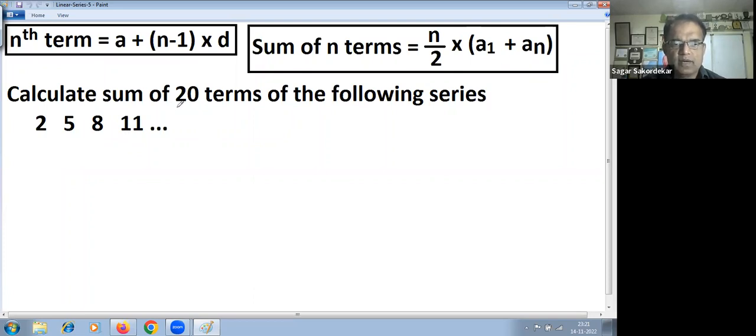So first job is we have to find 20th term, and for that we already studied this formula: nth term is equal to a, that is first term, plus n minus 1 into difference. nth term is equal to a, that is first term, that is 2, plus n, here is 20, minus 1 into difference, as you can see clearly here is 3.